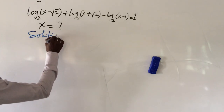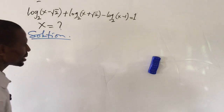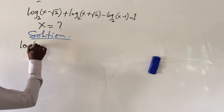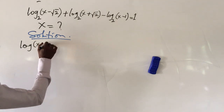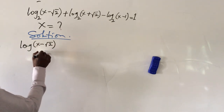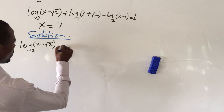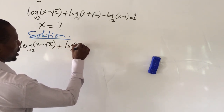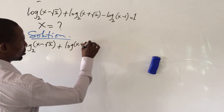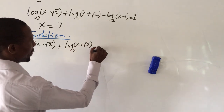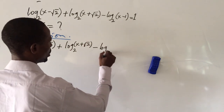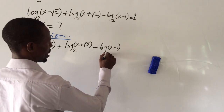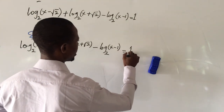We write down our equation. The equation is: log bracket (x plus root 2) close bracket, times log bracket (x plus root 2) close bracket, base 2, minus log bracket (x minus 1) close bracket, base 2, equals 1.